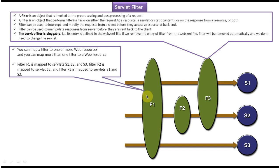We can map one filter to many web resources. So in this case filter 1 is mapped to S1, S2, S3. Three servlets it mapped. So it is the example of one filter mapped to many web resources.